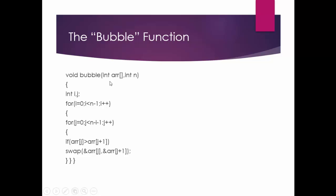This is the bubble function. We are passing the array and the number of elements — in this case our array has 6 elements, so n is equal to 6. We have i and j as the two iterators. For i equal to 0, while i is less than n minus 1, i plus plus.